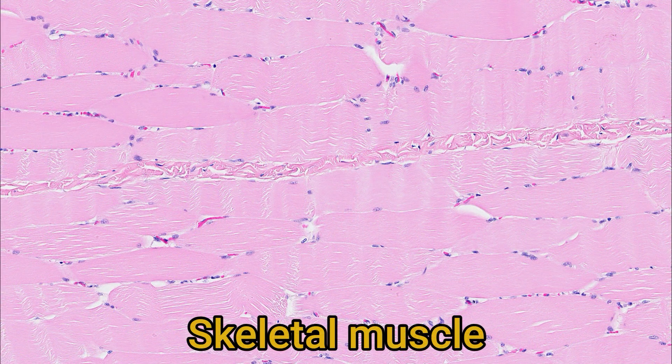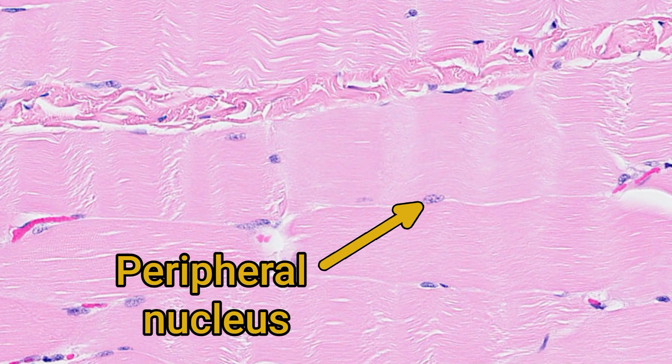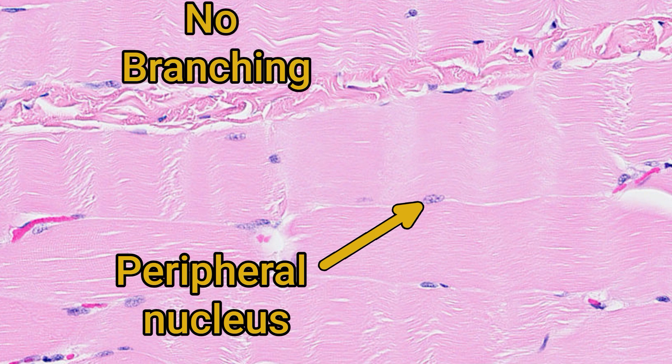While on the topic of muscle, it's worth spending a little time on how to tell the difference between cardiac muscle and skeletal muscle. Both have striations and multiple nuclei per cell, but skeletal muscle nuclei are peripheral, and skeletal myocytes don't branch to join with one another.